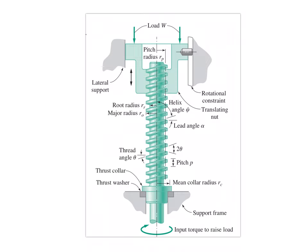Before we start writing equations, think about what are the forces that resist the movement of this load up the screw — as I am raising the load, what forces are going to resist this motion? There are two predominant forces: one is the friction between the thrust collar and the thrust washer, and the second is the frictional force arising at the threads mating with the translating nut.